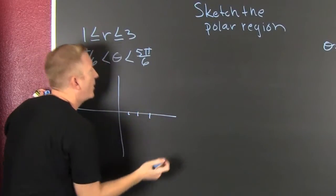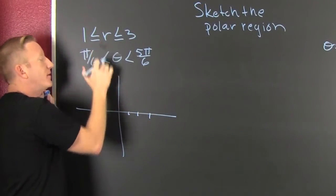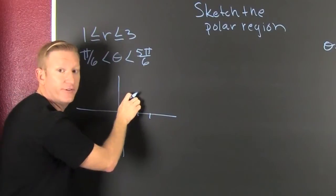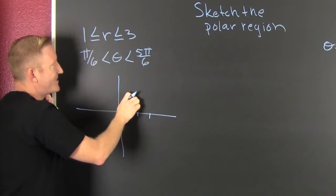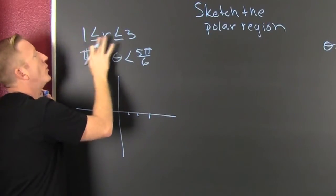One, two, three. My r, how far I go from the origin, is restricted between one and three.